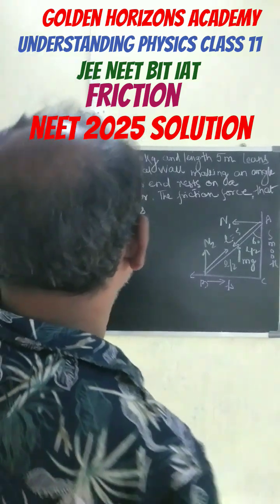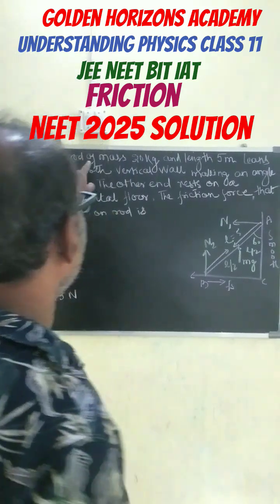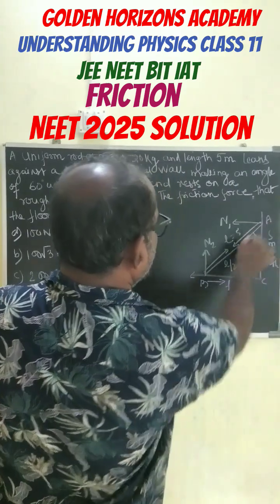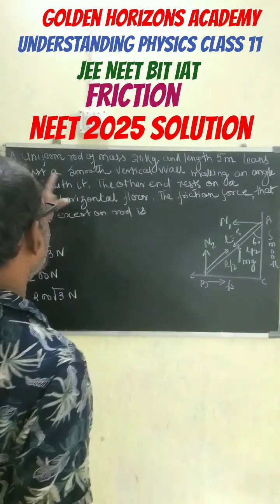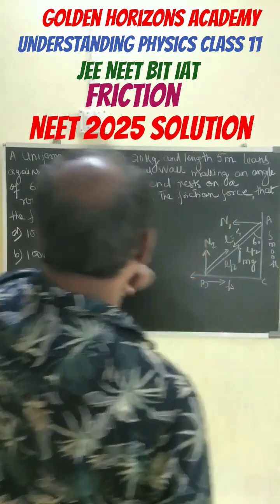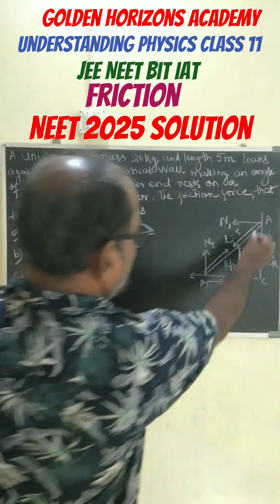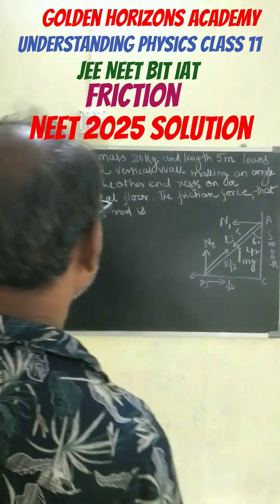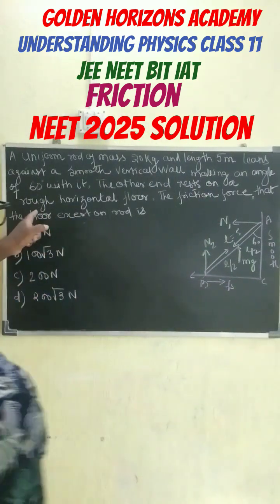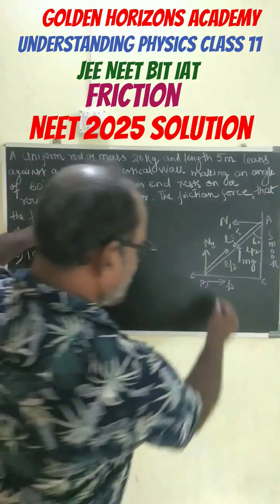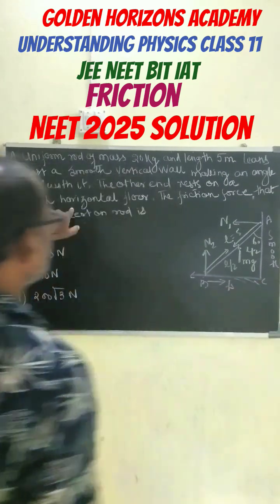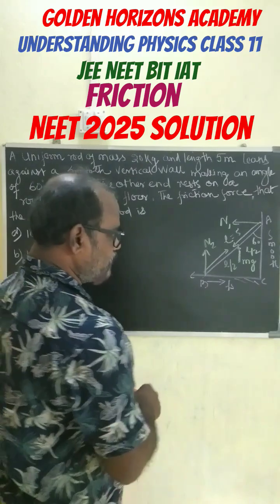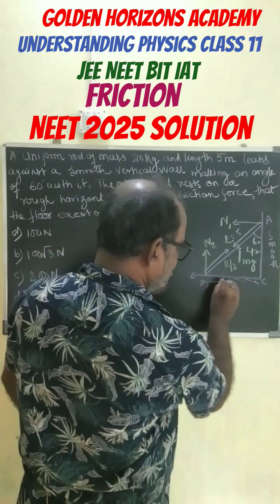Hello, this is a question from NEET. A uniform rod of mass 20 kg and length 5 meters is suspended against a smooth vertical wall. Let the positions A and B be the ends of the rod. The other end rests on a rough horizontal plane. Find out the frictional force — which will act in this direction.